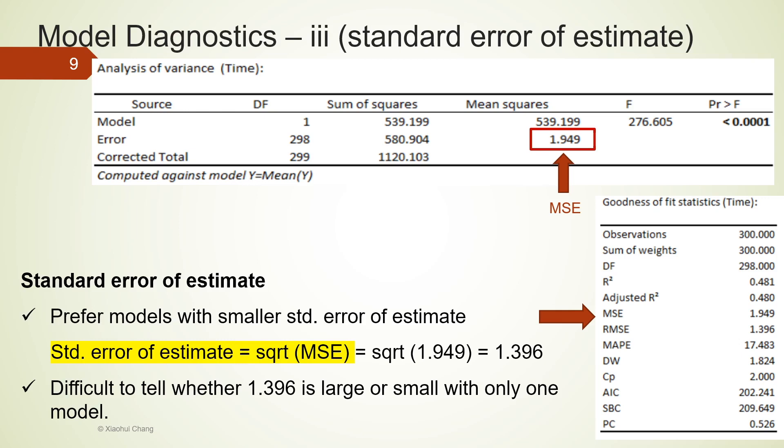From the absolute sense, 1.396 is a somewhat small number, but it would be difficult to tell whether this is small enough without doing an actual statistical test. We do not have a clear threshold for this metric. So this is one drawback of using standard error of estimate.